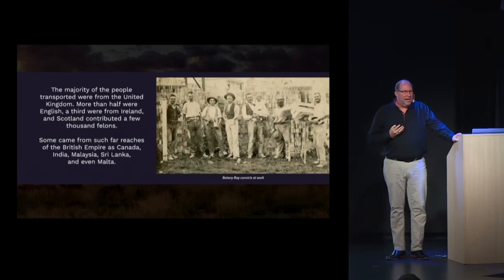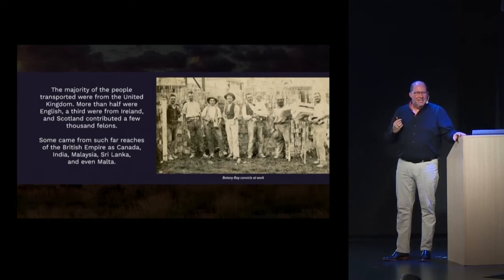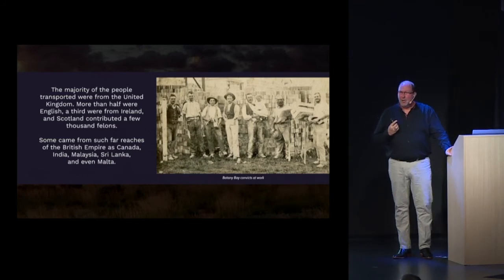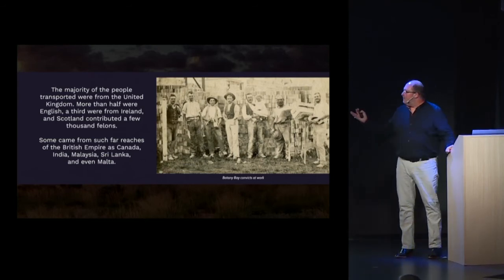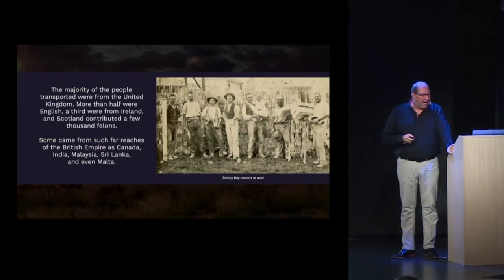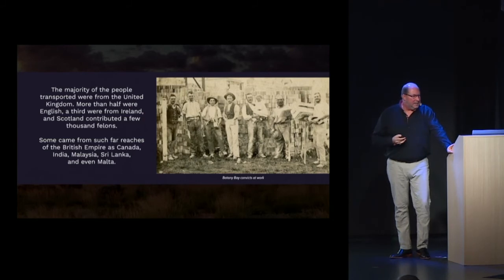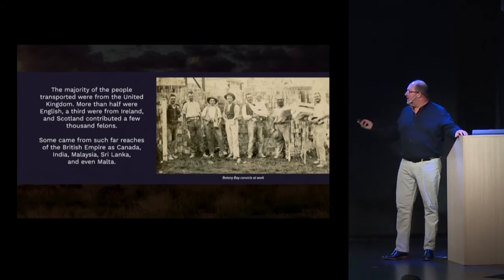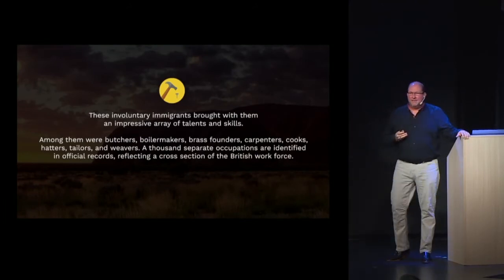Britain was effectively seeking certain types of people to go to Australia — finding them guilty of crimes whether they were guilty or not, and removing them from the population. The majority transported were from the United Kingdom: more than half were English, a third from Ireland, and Scotland contributed a few thousand. But they came from as far away as Canada, Sri Lanka, Kenya, and even Malta. These involuntary immigrants brought with them an incredible array of skills and talents.